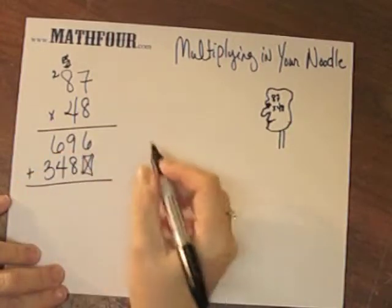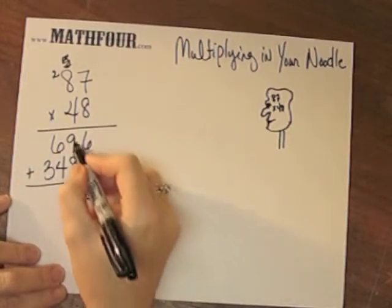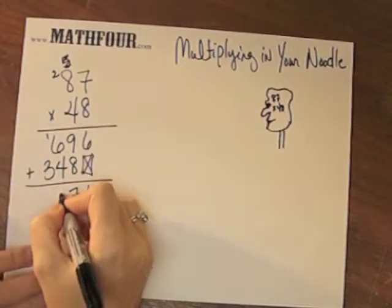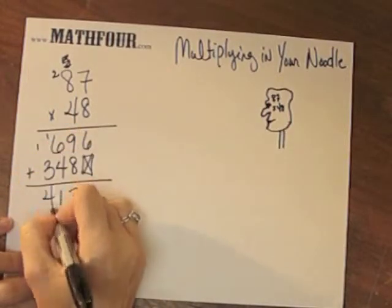And then I add these 2 guys and go 6, 17— I'm sorry, 6 plus 4 is 10, 11, and 4. So there's my number.